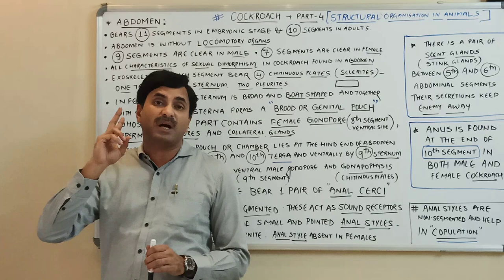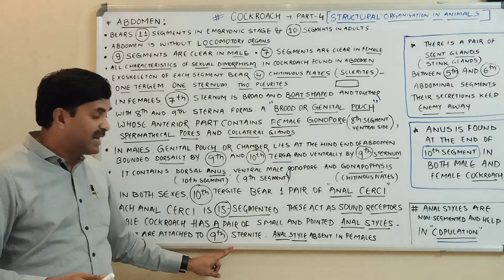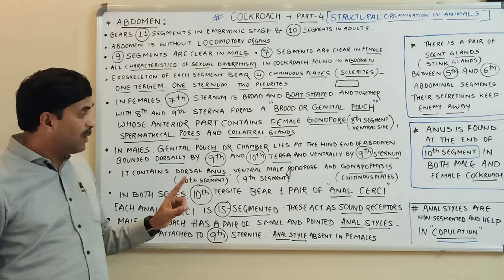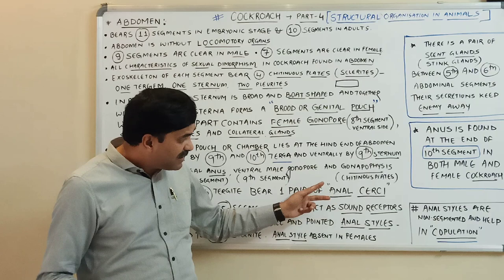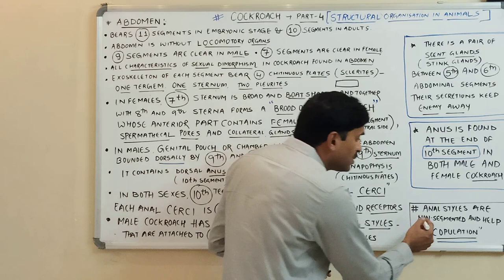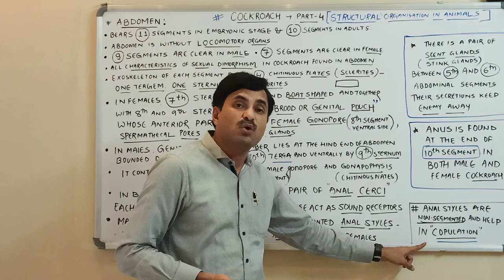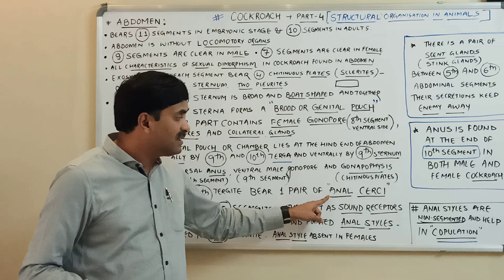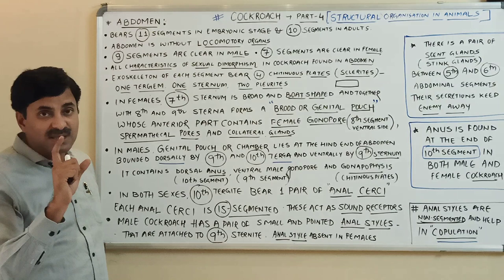Anal styles are absent in females, and their presence is one way to differentiate a male from a female cockroach externally. The key difference between anal cerci and anal styles: anal cerci are segmented (multi-segmented) and act as sound receptors, while anal styles are non-segmented and help in copulation.